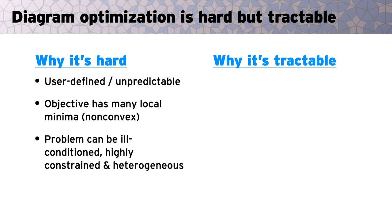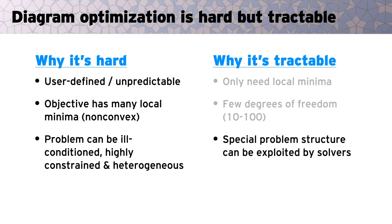However, there is cause for hope. First, good diagrams don't need to be globally optimal. One only needs a local minimum, for example, just that the label can't be nudged to a better place. Next, as you can guess from these simple set diagrams, we only have a few degrees of freedom in diagramming problems, just tens to hundreds, unlike, say, the millions of degrees of freedom often found in optimization for deep learning. Lastly, diagramming has a special problem structure that can be exploited by solvers, such as breaking down the diagram into sub-problems.